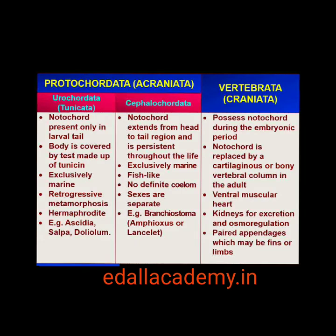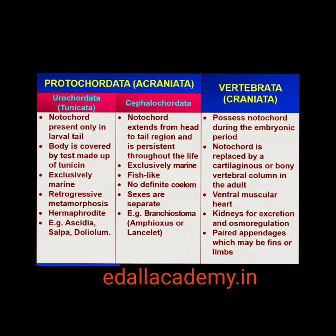The members of subphylum Vertebrata possess notocord during the embryonic period. The notocord is replaced by a cartilaginous or bony vertebral column in the adult. Thus all vertebrates are chordates but all chordates are not vertebrates. Besides the basic chordate characters, vertebrates have a ventral muscular heart with two, three or four chambers, kidneys for excretion and osmoregulation, and paired appendages which may be fins or limbs.